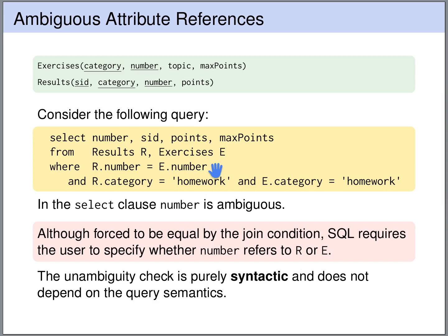So in the WHERE clause, the number attribute of R is forced to be equal to the number attribute of E. So actually, no matter whether number refers to R or E, this is the same value, semantically speaking. However, for SQL this is not sufficient. It's not sufficient that this is semantically equal, SQL only has a syntactic check of ambiguity, and it requires us to explicitly resolve this ambiguity, so for every attribute it has to be clear what tuple it refers to. So we have to write R.number or E.number even though this will give the same value.